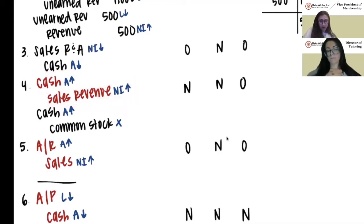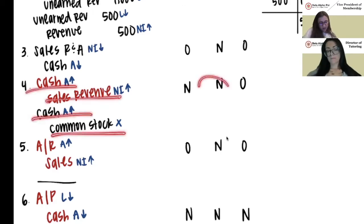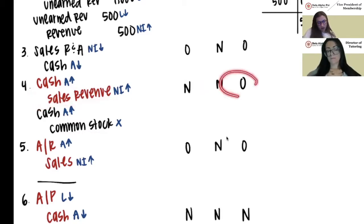What they should have done, since they were issuing common stock, was a debit to cash — which also increases assets — and a credit to common stock, which does not affect assets, liabilities, or net income. Since assets were increased correctly either way, there's no effect on assets. No accounts affect liabilities, so no effect there. But net income was increased when it should not have been, so net income is overstated.